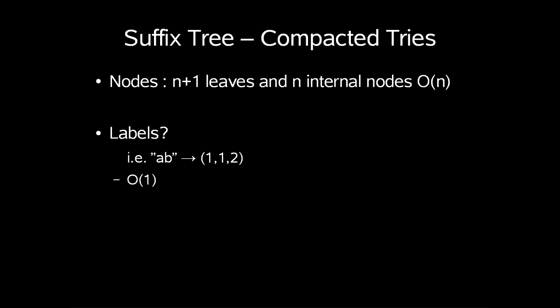I am not going to go into details about labels. Just know that they can be represented in constant space, like in this example ab would be 1, 1, 2, meaning start index and the two child nodes.